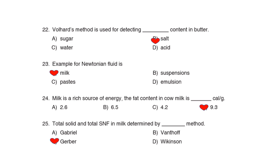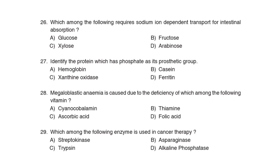26th Question: Which among the following requires sodium ion-dependent transport for intestinal absorption? Correct Answer: Option A: Glucose. 27th Question: Identify the protein which has phosphate as its prosthetic group. Correct Answer: Option B: Casein. 28th Question: Megaloblastic anemia is caused due to the deficiency of which among the following vitamins? Correct Answer: Option D: Folic acid.